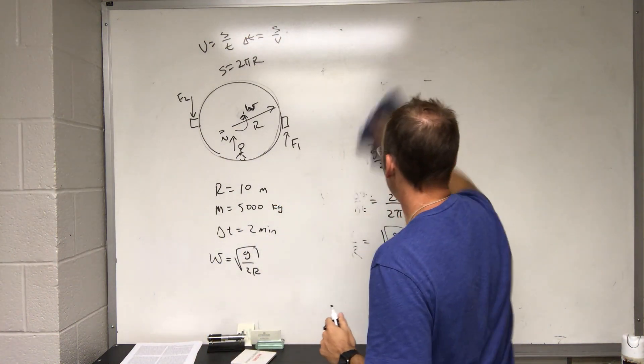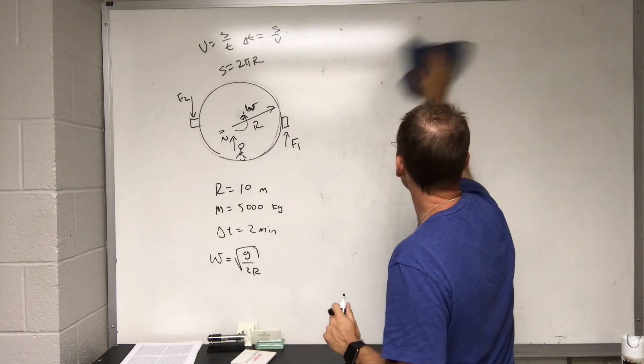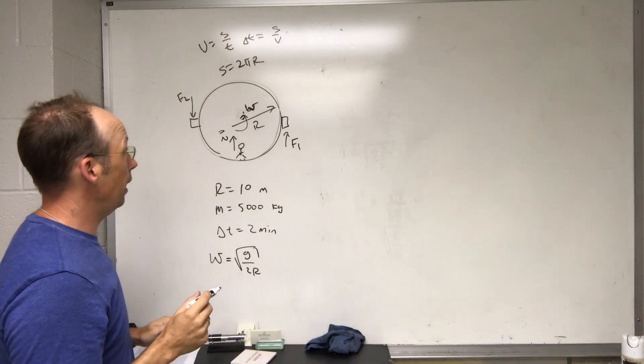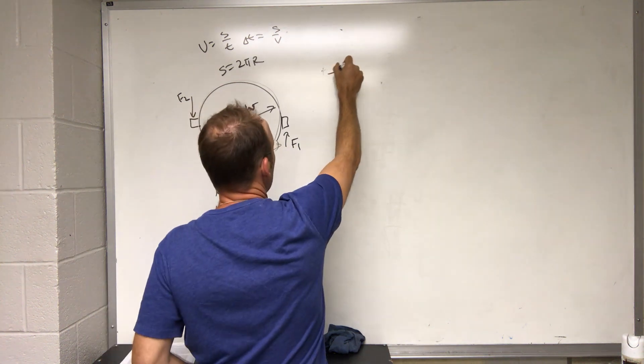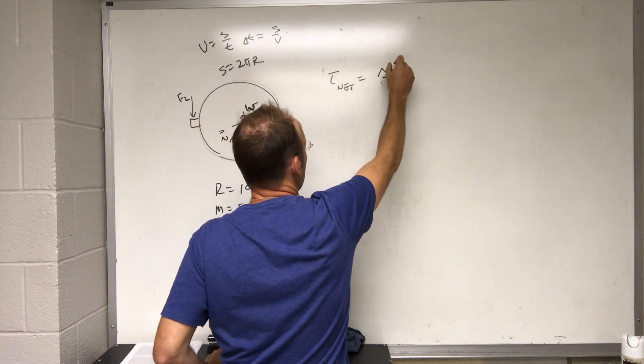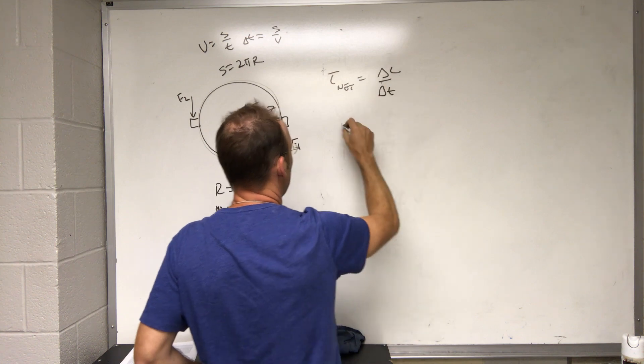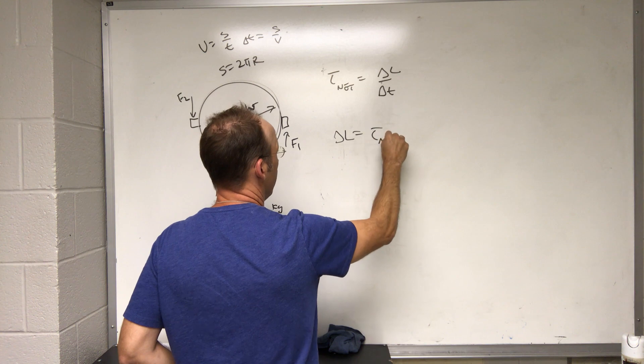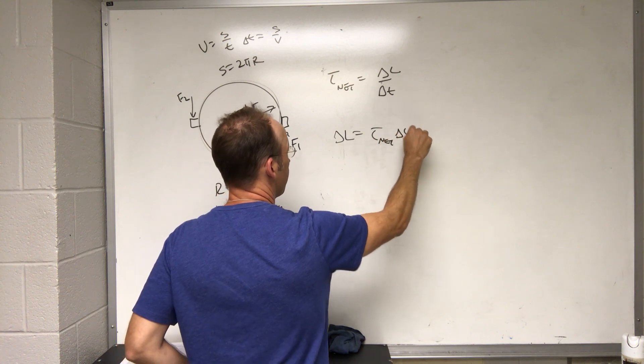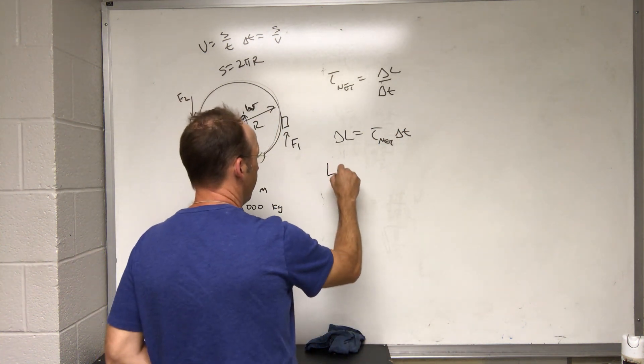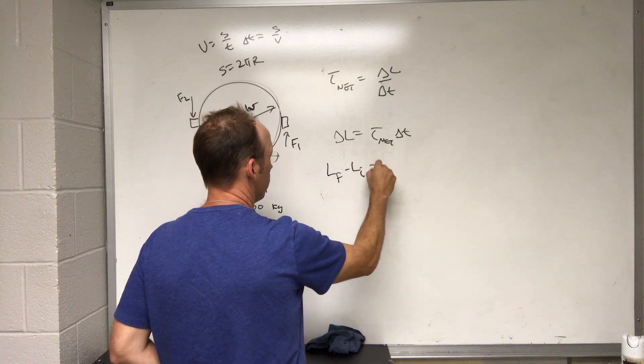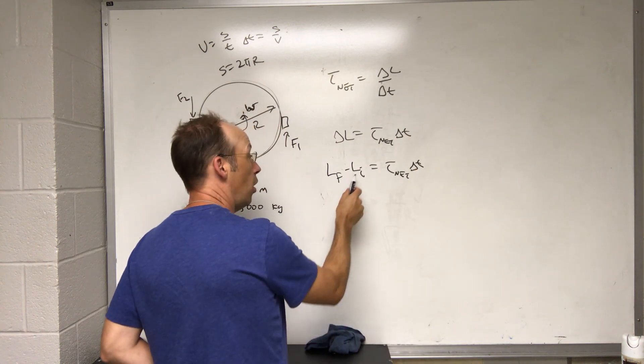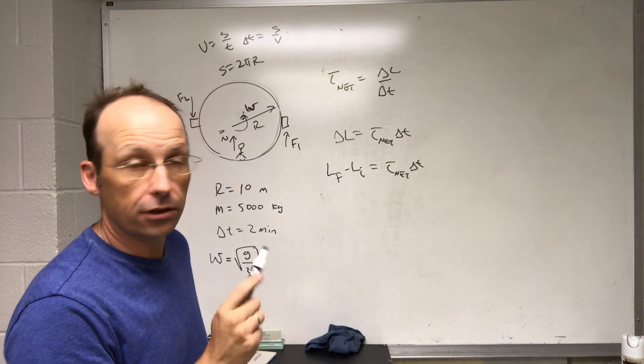That was not really an angular momentum problem, that was something else. Okay, so now I can use the angular momentum principle. This says that the net torque is going to be the change in the angular momentum over the change in time. If I solve that, delta L equals torque net delta t, or I could write this as L final minus L initial equals torque net delta t. I know the initial angular momentum is zero because it starts from rest.